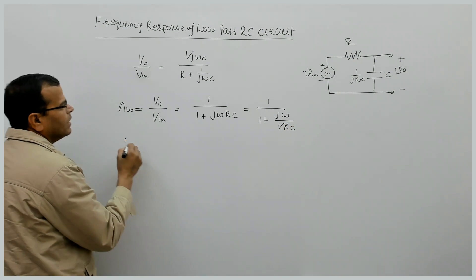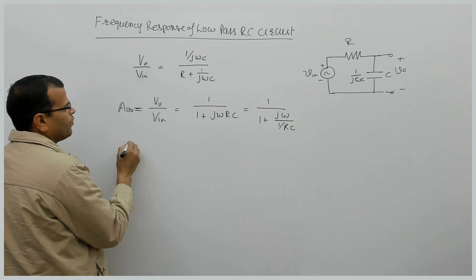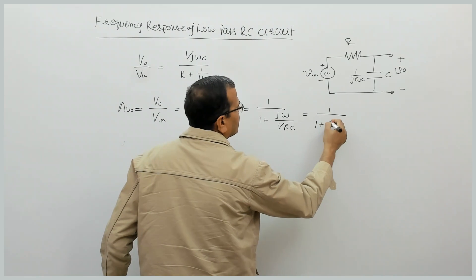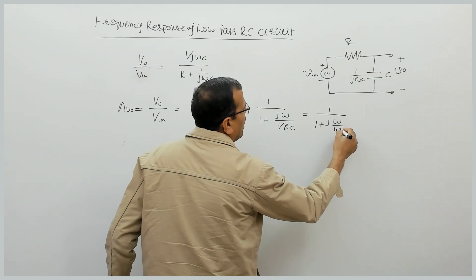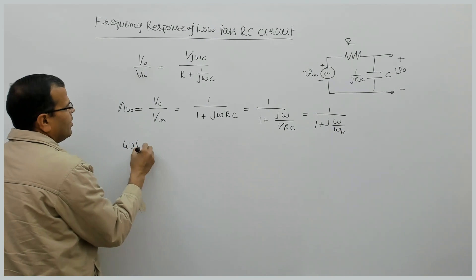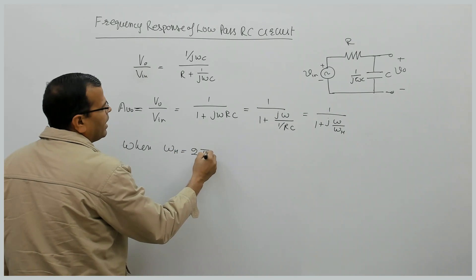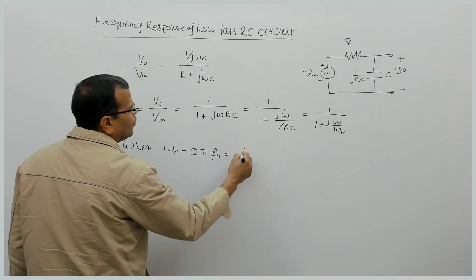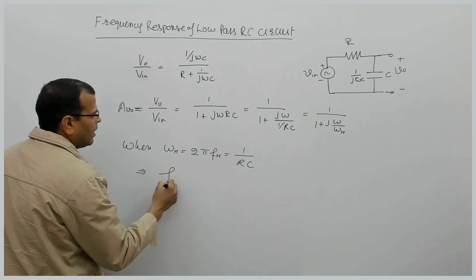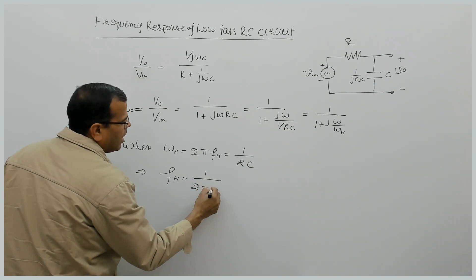This can be rewritten as 1/(1 + jω/(1/RC)), or equivalently 1/(1 + jω/ωH), where ωH = 2πFH and FH = 1/(2πRC). So FH is equal to 1/(2πRC).